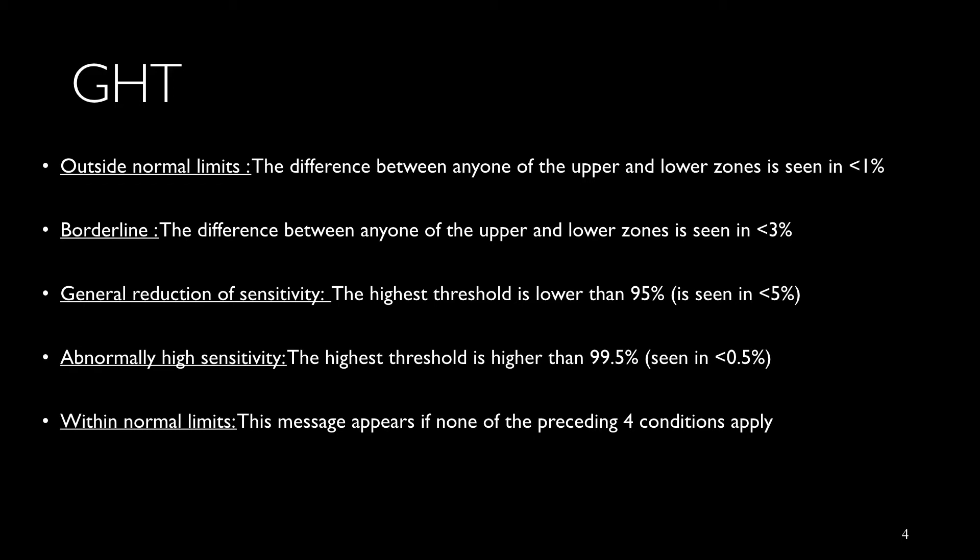When the highest threshold value is higher than 99.5% of the normal database, it's called abnormal high sensitivity, and it's seen in those people with high false positives.